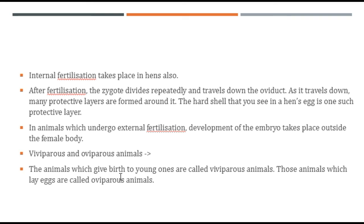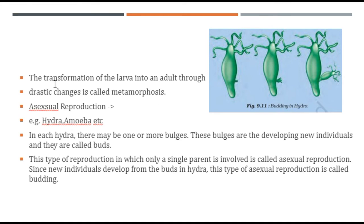We had studied metamorphosis in Class 7th Science. The transformation of a larva into an adult through drastic changes is called metamorphosis. When the larva gets converted into an adult, it undergoes big changes — this is called metamorphosis. So far we have studied sexual reproduction in animals; now we will study asexual reproduction in animals.